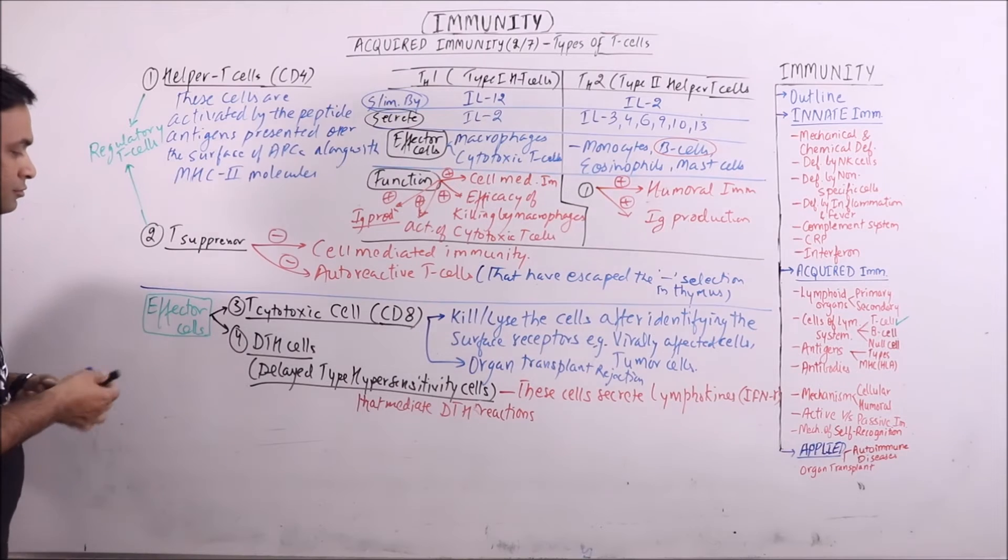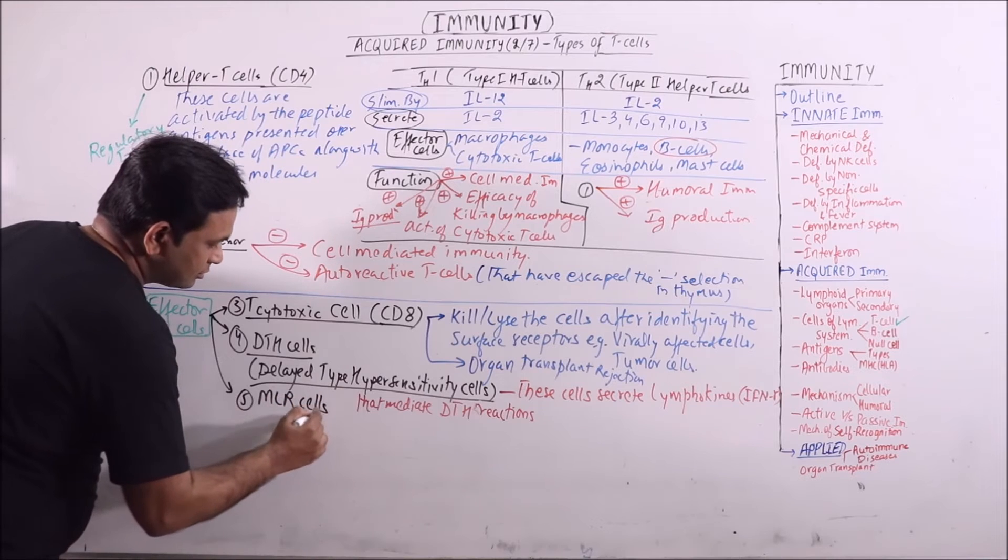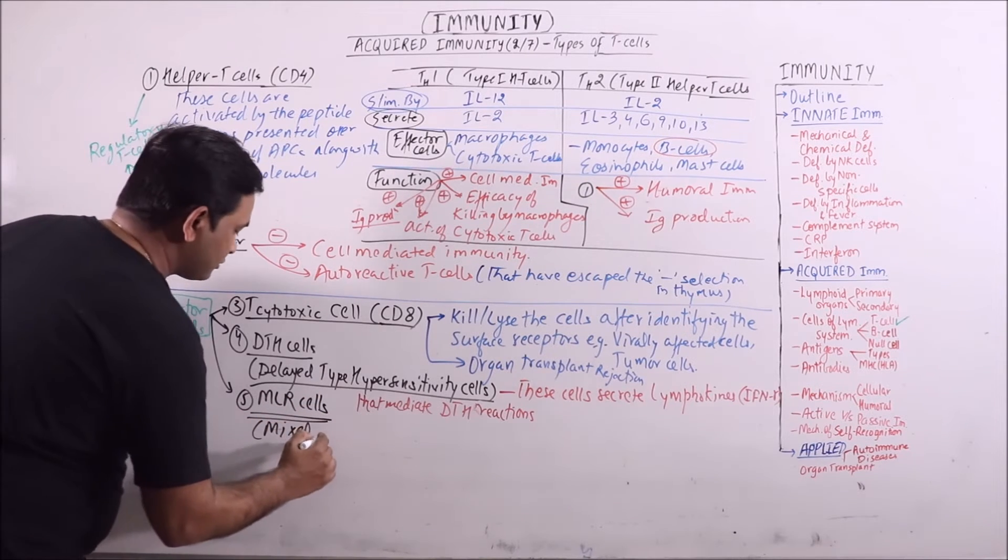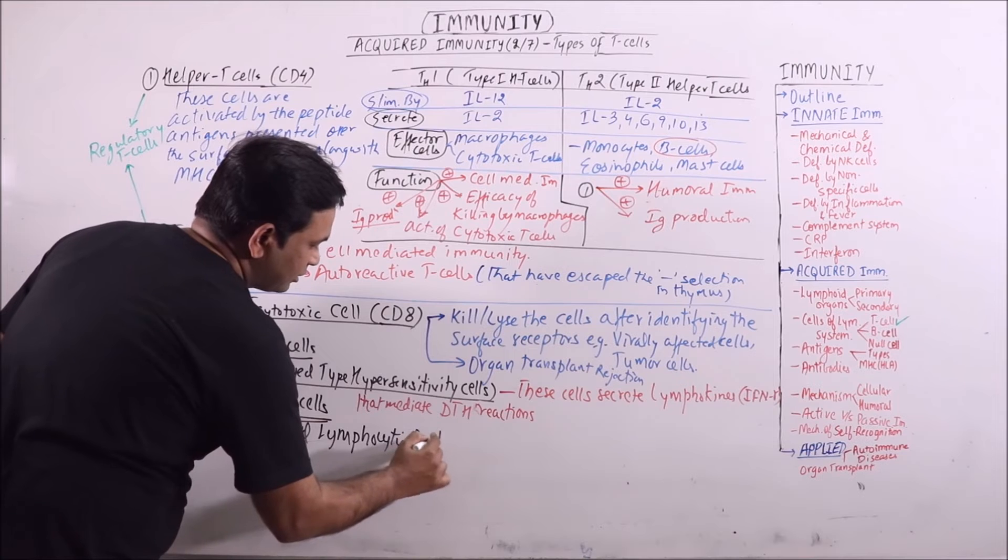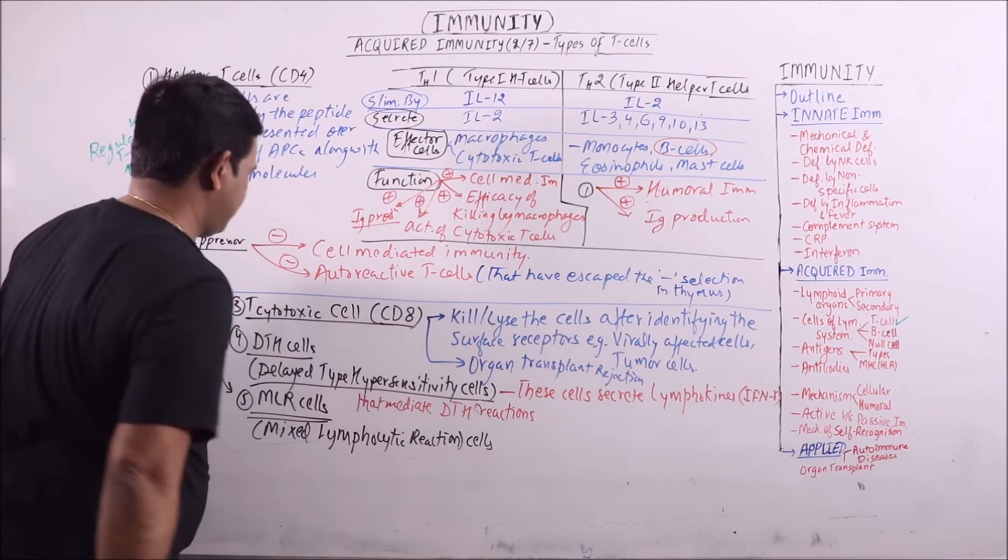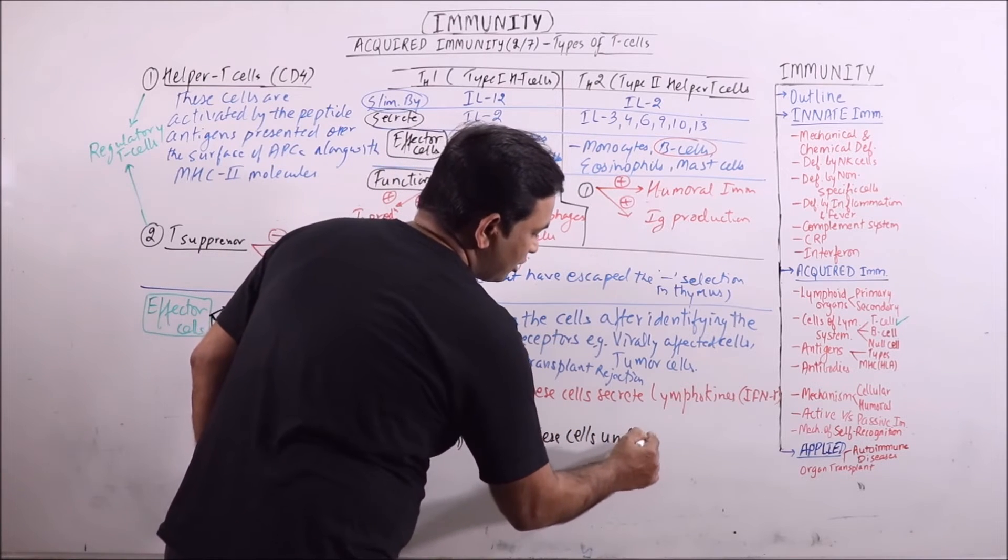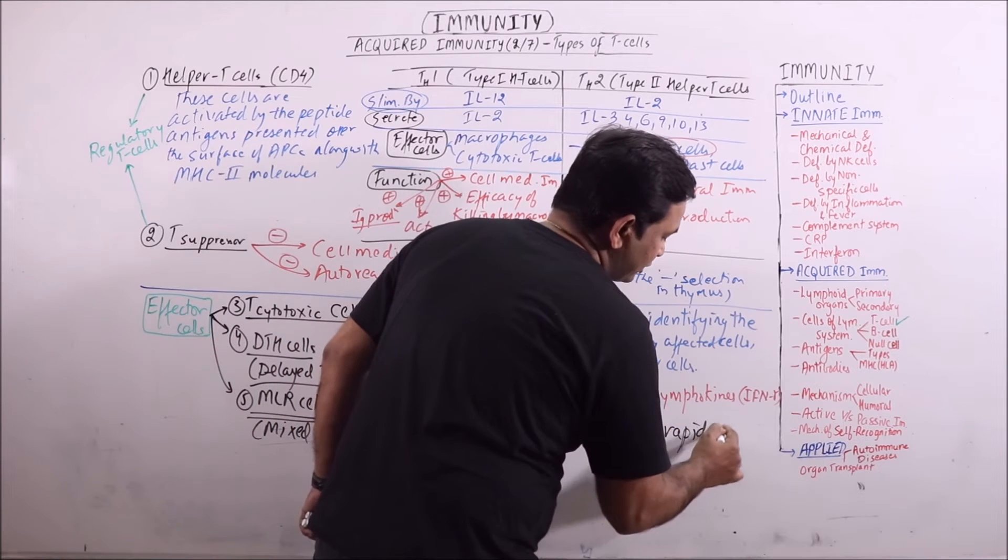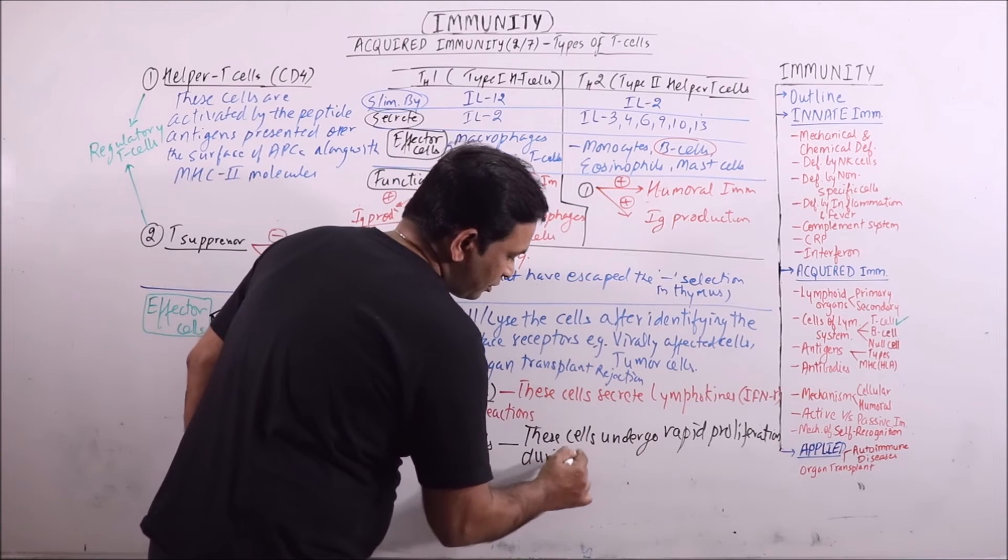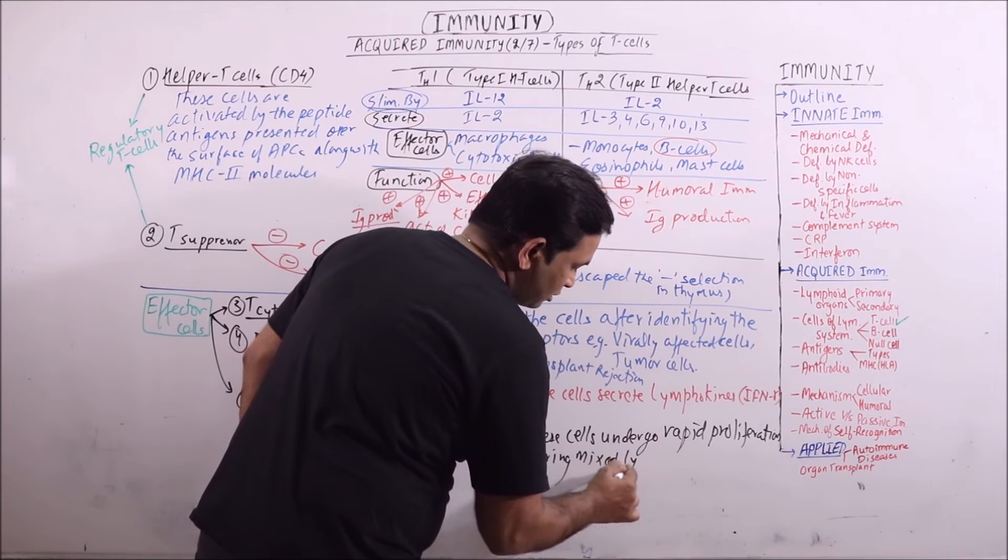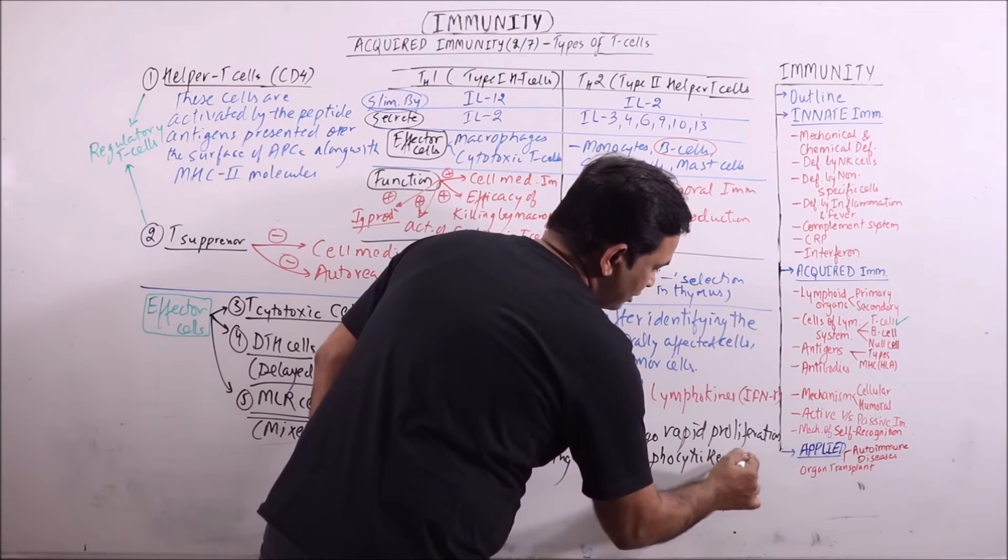Next one is MLR cells. These are mixed lymphocytic reaction cells. These cells undergo rapid proliferation during mixed lymphocytic reactions.